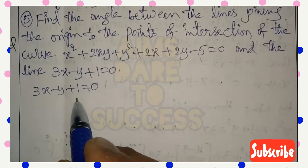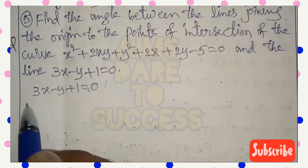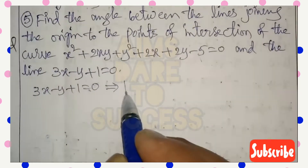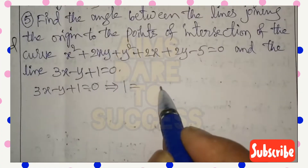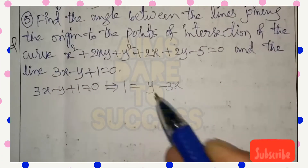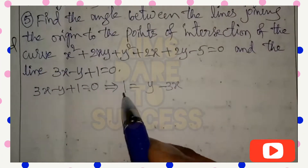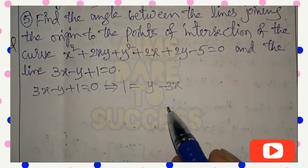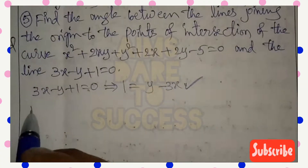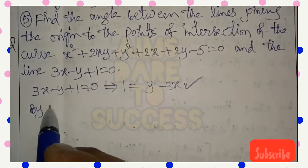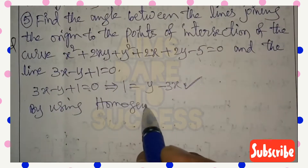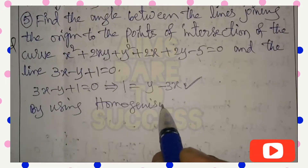This is related to the homogenizing method. The given line is 3x - y + 1 = 0. The constant should be positive, so rearranging: 1 = y - 3x.